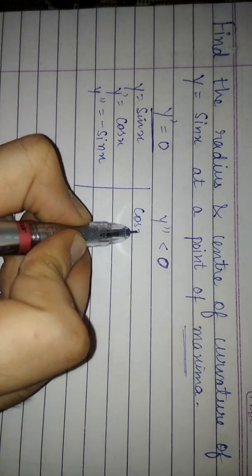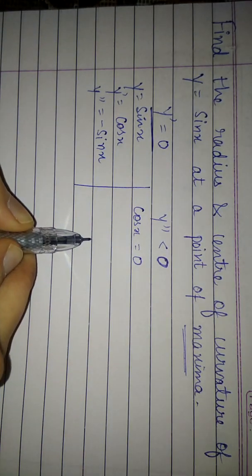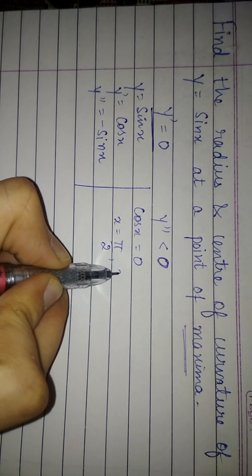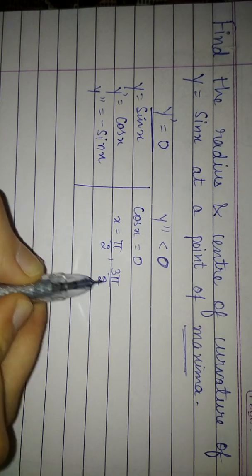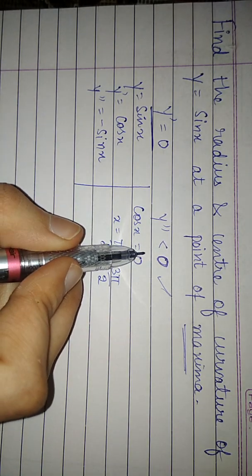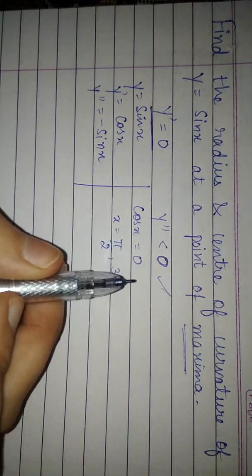So cos x will be 0 at x equals π by 2 and 3π by 2. Also we have to satisfy the second condition that second derivative must be negative, that is less than 0.